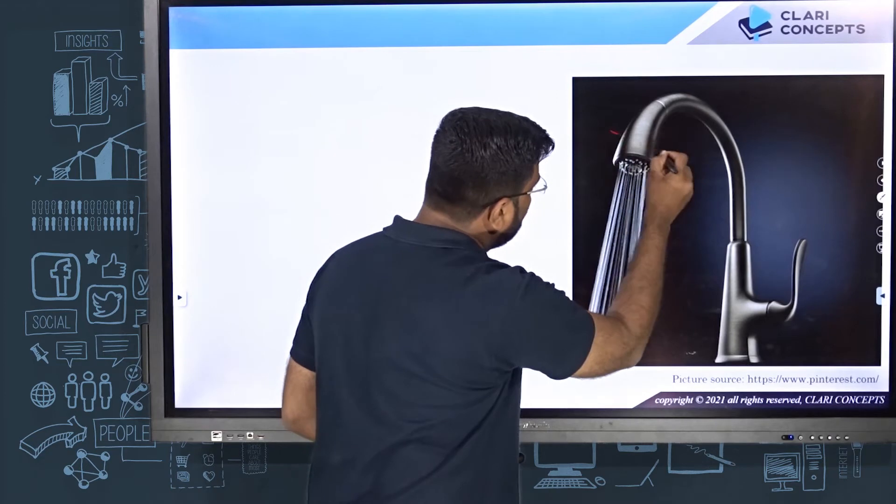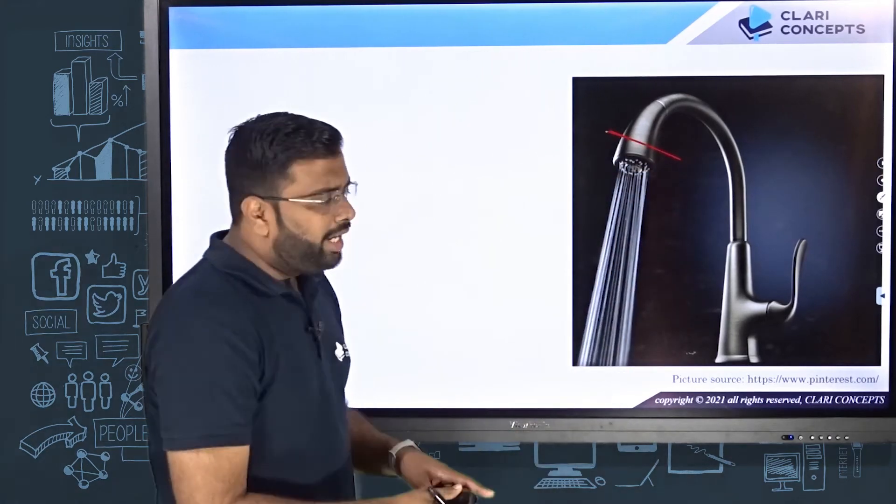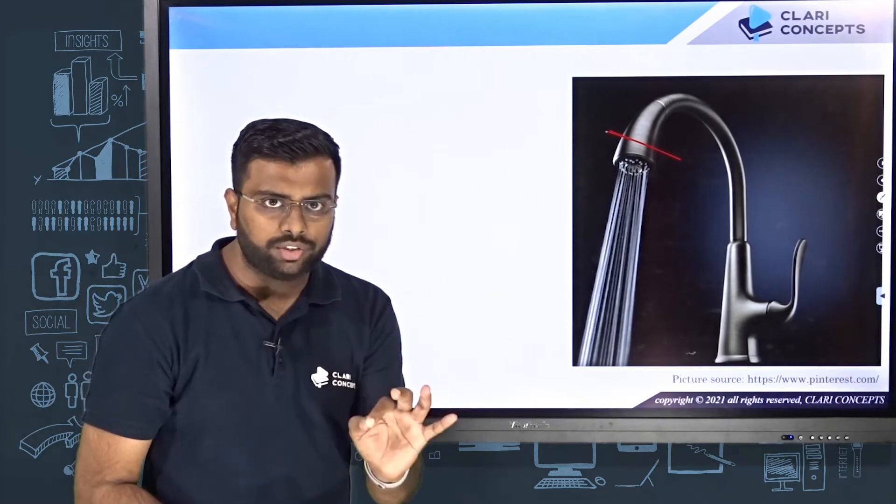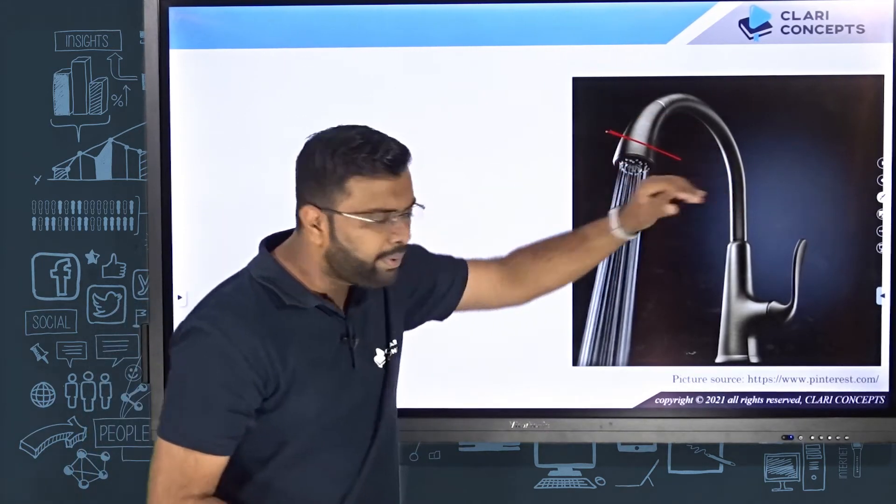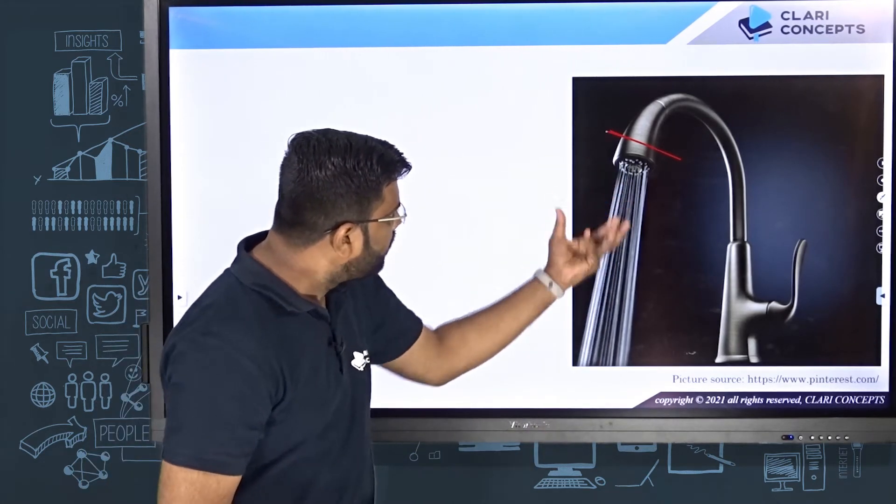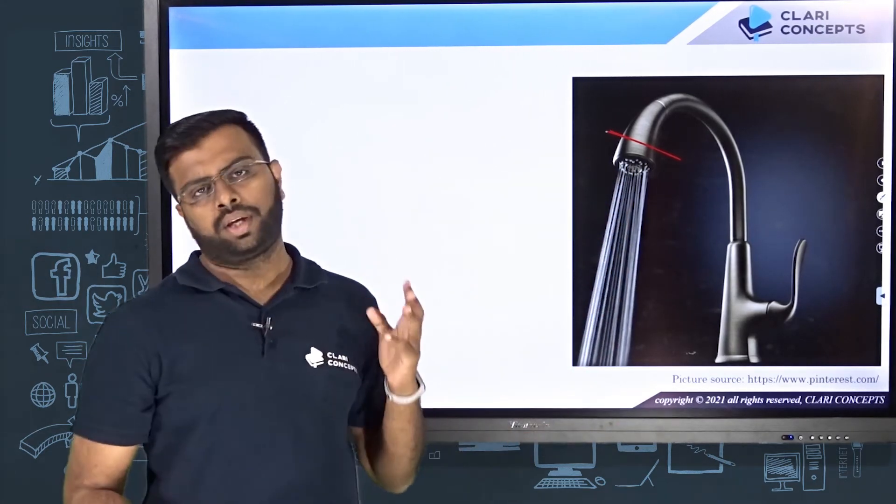So flow rate basically is nothing but the amount of fluid crossing any section of the pipe per second. It also means the amount of water coming out of this tap in every second.